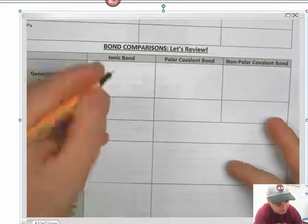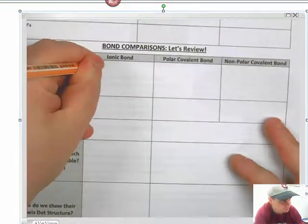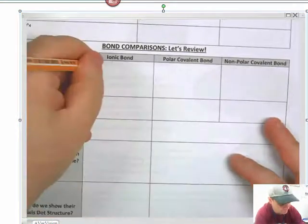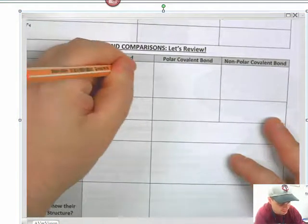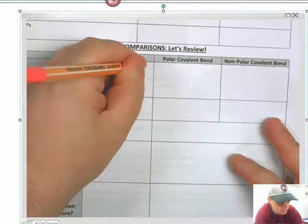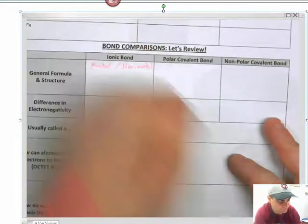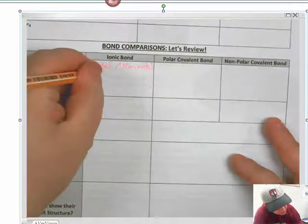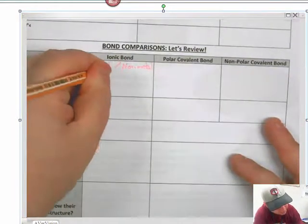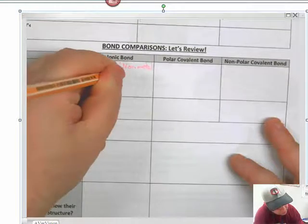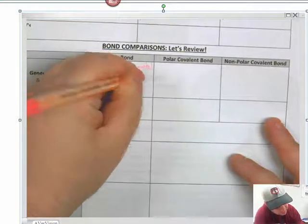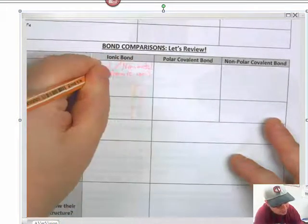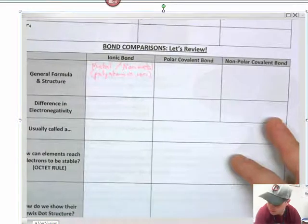Starting off with ionic bonds. Remember, ionic bonds have a metal and a non-metal. They may have polyatomic ions like ammonium and sulfate that are on the reference packet that you need to know.